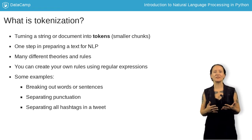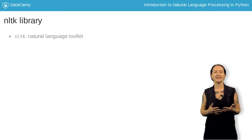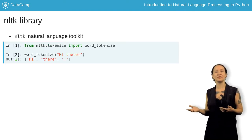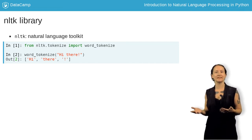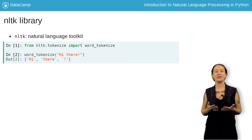One library that's commonly used for simple tokenization is NLTK, the Natural Language Toolkit Library. Here is a short example of using the word_tokenize method to break down a string into tokens. We can see from the result that words are separated, and punctuation are individual tokens as well.